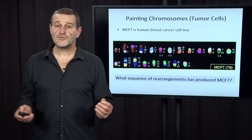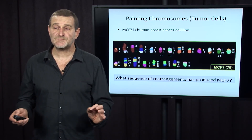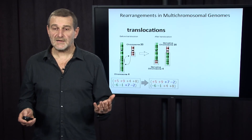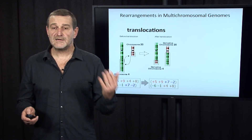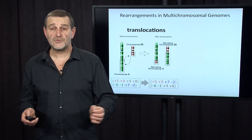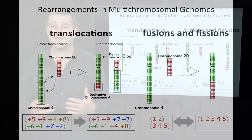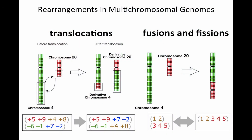It is a very difficult question to figure out what sequence of rearrangements has produced the MCF7 tumor genome. In the next section, we will look at operations on multichromosomal genomes that include not only translocations, but also fusions and fissions. For example, fusions simply combine two chromosomes — glue them together — and fissions break a chromosome into two. For example, humans have 23 chromosomes, but chimpanzees, orangutans, and gorillas have 24 chromosomes, because a few million years ago two chromosomes in the human-chimpanzee ancestor were fused together into a single chromosome in humans.